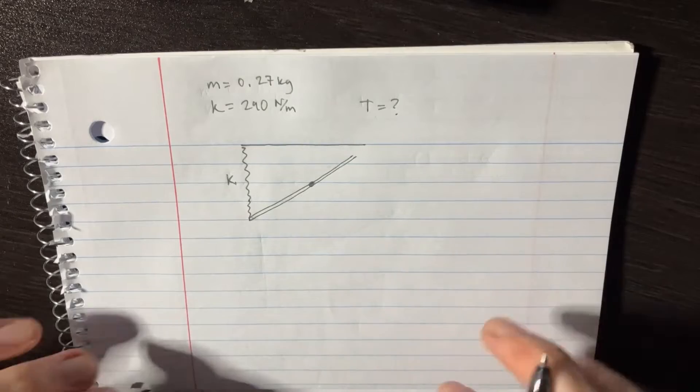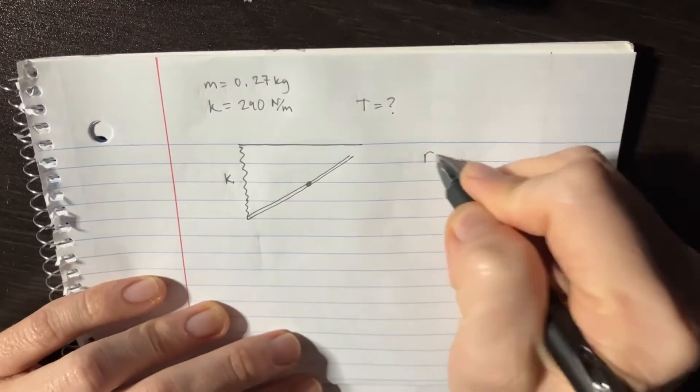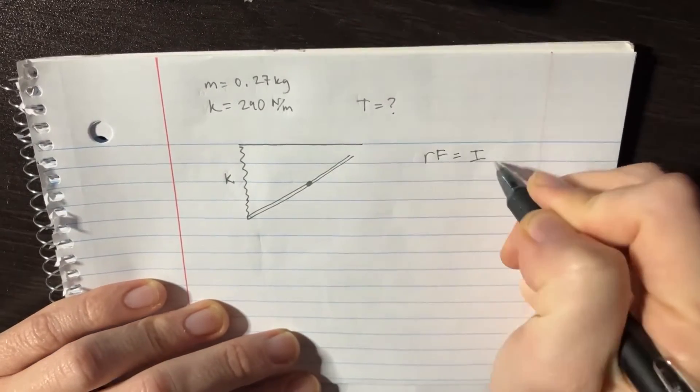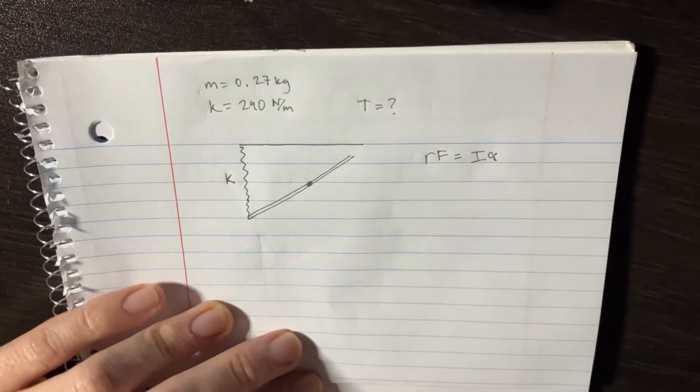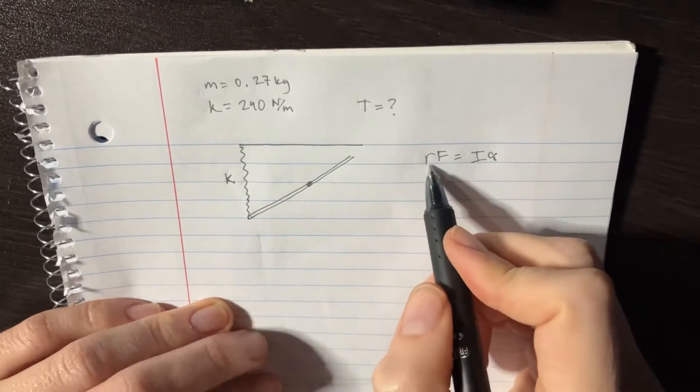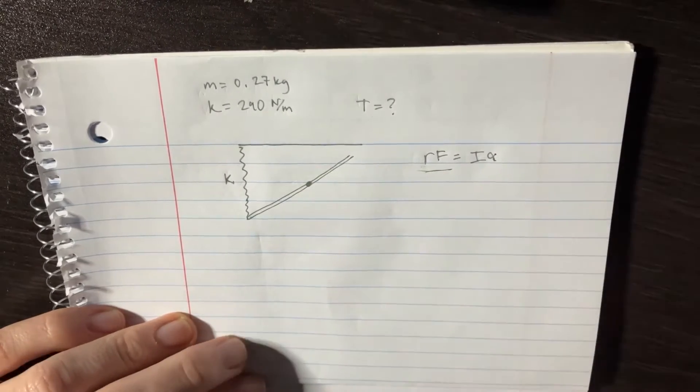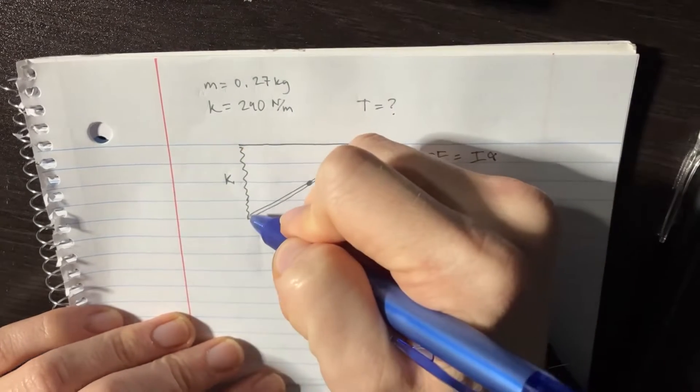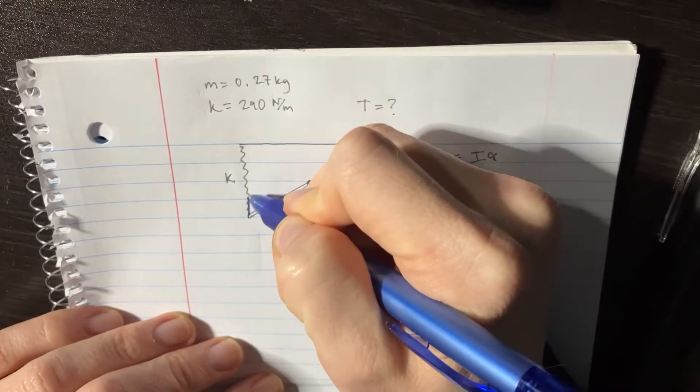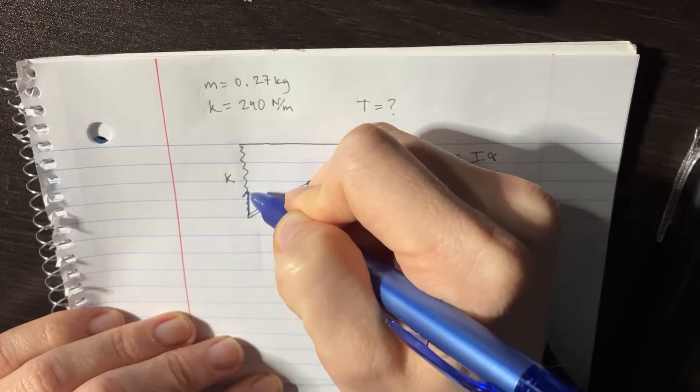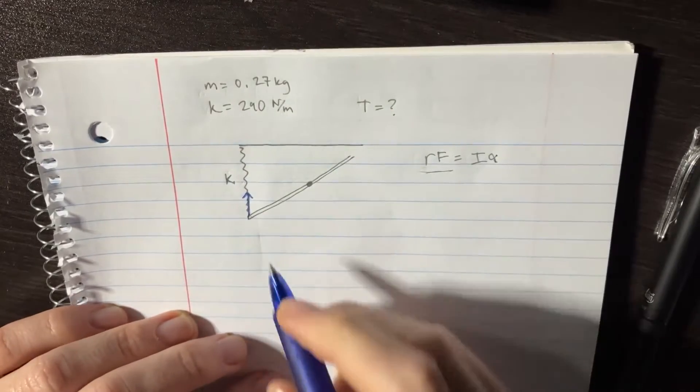In order to get started with this, we're going to need to remember the equation RF equals IA. This is a really important equation. We'll start with the left side RF. If we can figure out what RF is, that would be awesome. Turns out there's a spring here - it's a spring force.